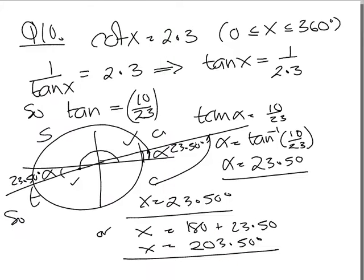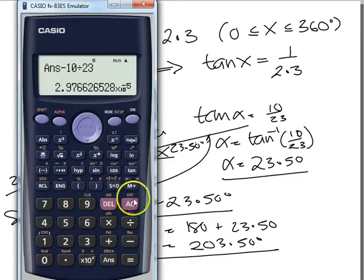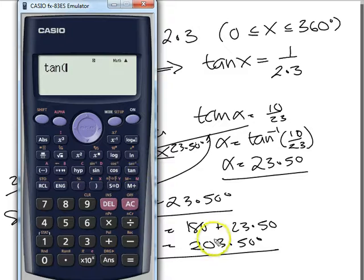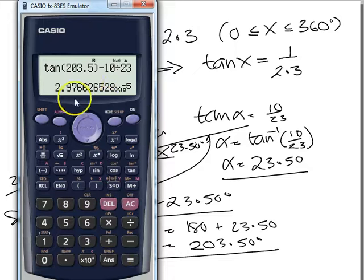And the other one, 203.50. So it's tan. So this is a good enough check. 203. Right? Minus 10 over 23. We should end up with a really, really small number, which we do.